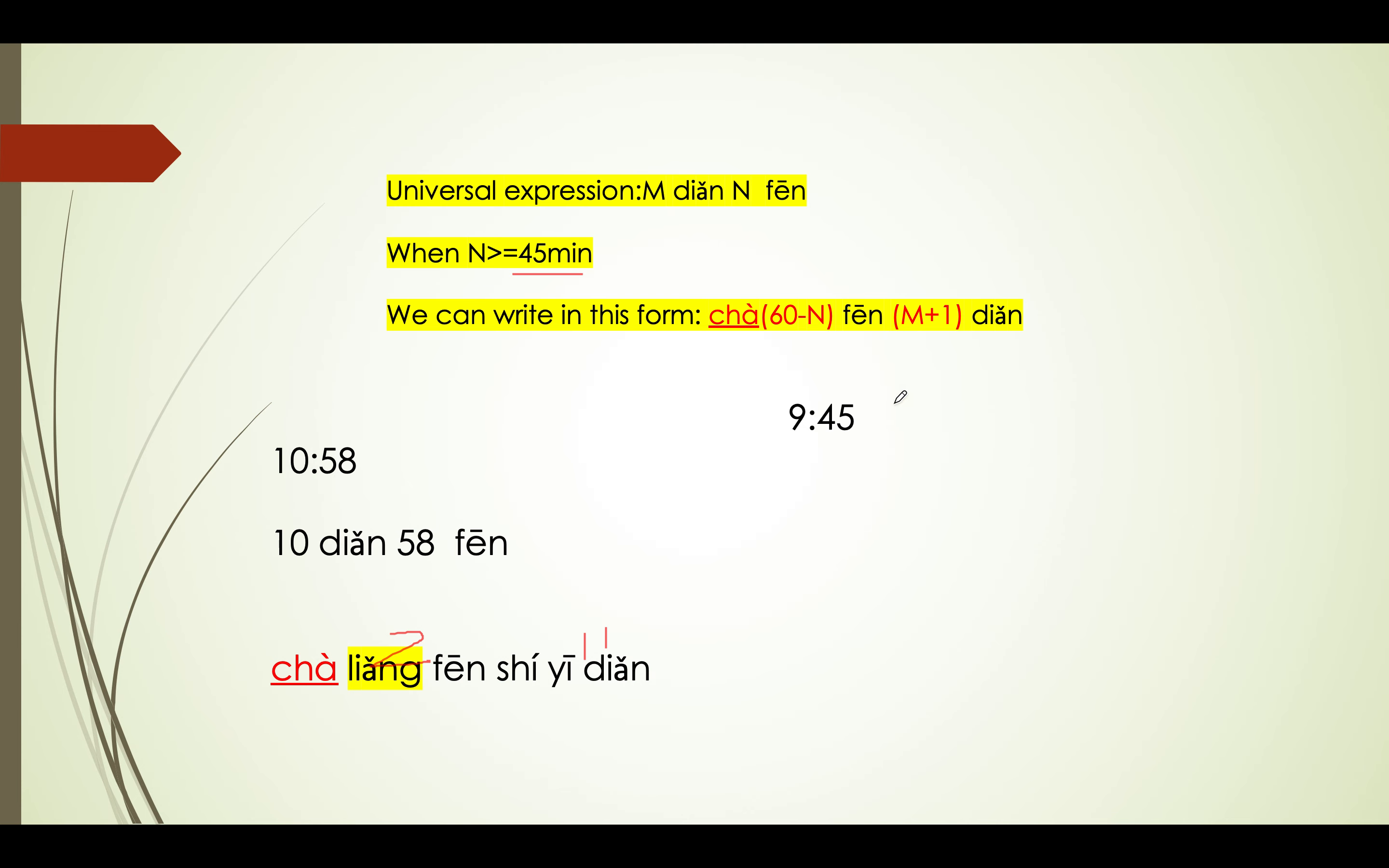Next, for the universal expression, 九点四十五分 or 九点三刻, right? So this number, more than 45 minutes, so the process, 差六十 minus 45分, 九 plus one点, so here, 差十五分十一点, right? So here, 差十五分十一点, 十五分, one quarter, so 一刻差一刻十一点.